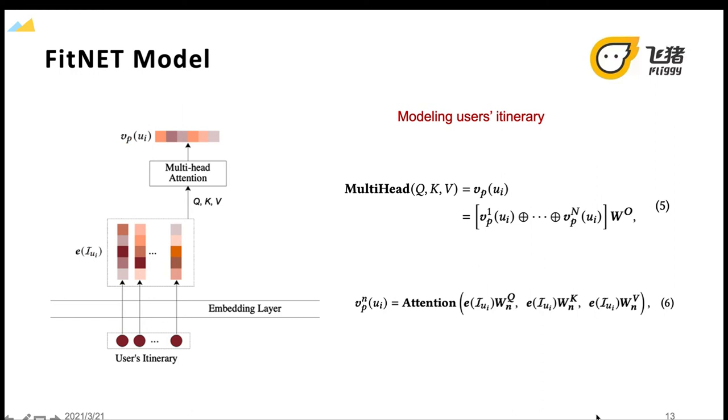The second attention module is modeling user's itinerary. We note that a single unconsumed order of a user cannot accurately describe the user's preference for an itinerary, such as a preference for the destination city or for the item category. Hence, a multi-head self-attention mechanism is employed in FitNet to capture the self-interactions among embedding vectors of unconsumed orders. The calculation is shown in equation 5 and 6.